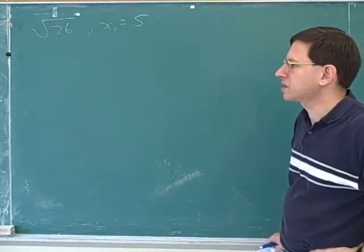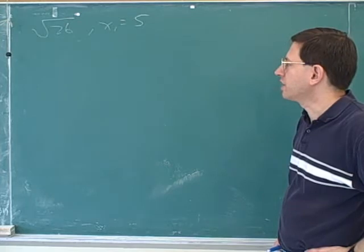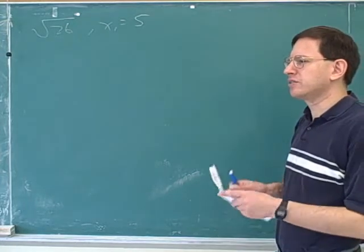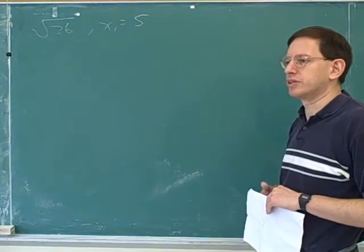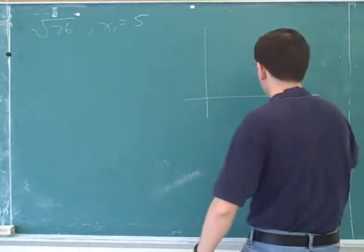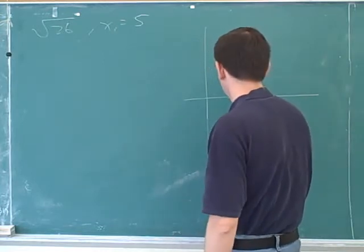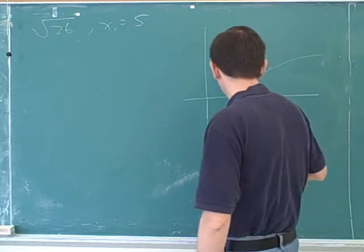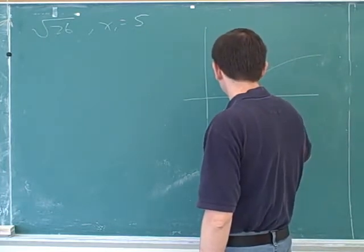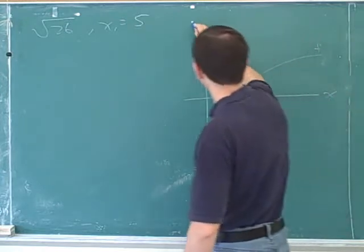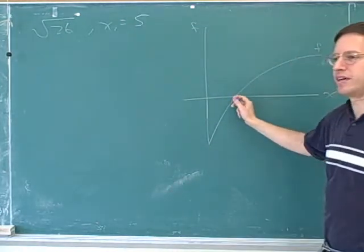So Newton's method is something you can use to evaluate square roots. Now, what Newton's method really does is it allows you to estimate the root of an equation. So for example, the root is where the function is equal to zero. So it allows you to estimate this.